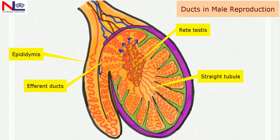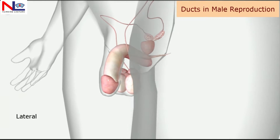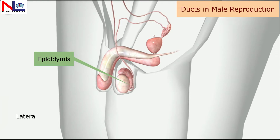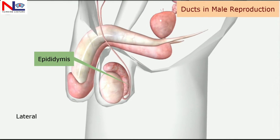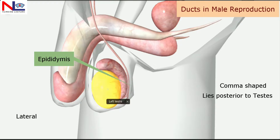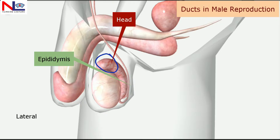The sperm reaches the rete testes and from here moves toward the coiled efferent ducts in the epididymis, and then finally into one common coiled tubule — the ductus epididymis. In this 3D animation in the lateral view, you can see the structure of the epididymis, which is a comma-shaped structure lying posterior to the testes.